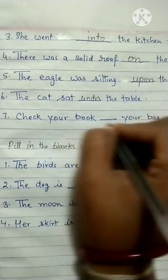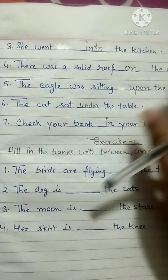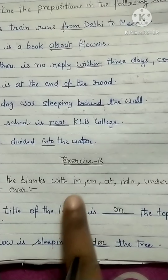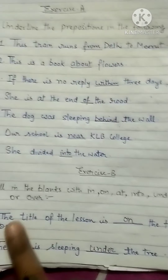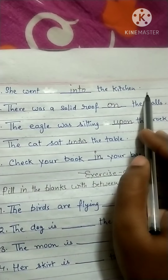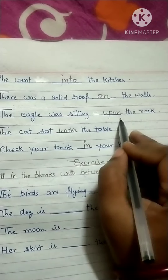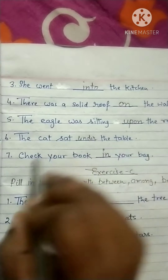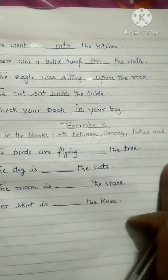'Check your book in your bag' — you can fill 'in' here. So I hope you all have understood how to fill in these words. These are all the words: in, on, at, into, under, upon, and over. The title of the lesson is on the top of the page; the cow is sleeping under the tree; she went into the kitchen; there was a solid roof on the walls; the eagle was sitting upon the rock; the cat sat under the table; check your book in your bag.